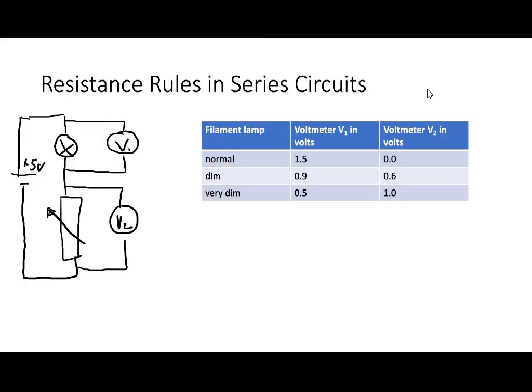So let's look at series and parallel circuits. Let's think about resistance rules in series circuits first of all. Here we've got a typical series circuit. We have a 1.5 volt battery, a bulb, and a variable resistor. We have a voltmeter V1 across the bulb measuring the voltage across it, and V2 measuring the voltage across the variable resistor.